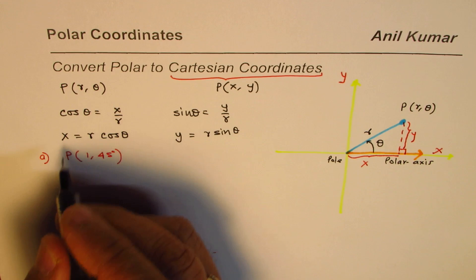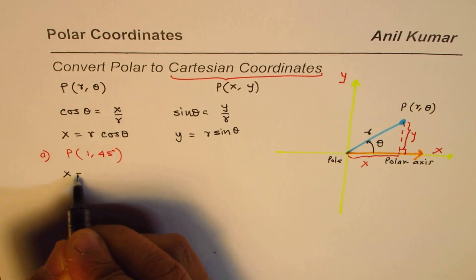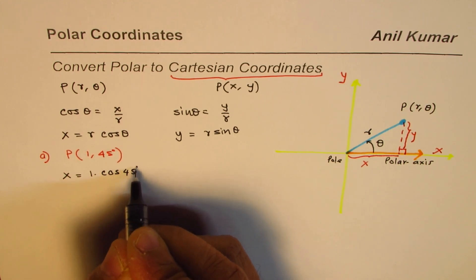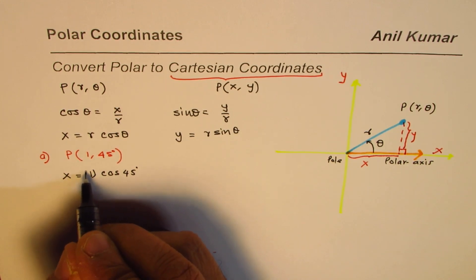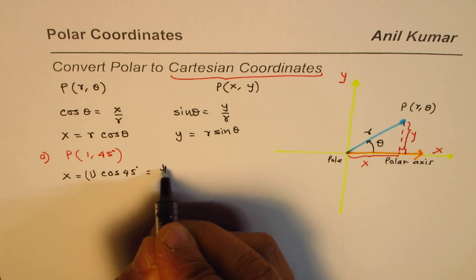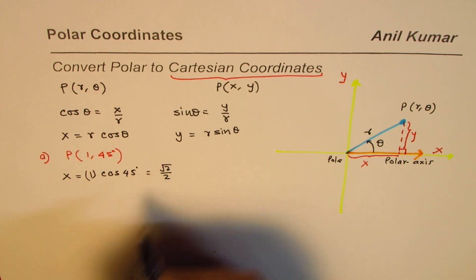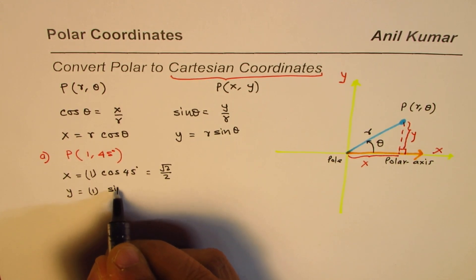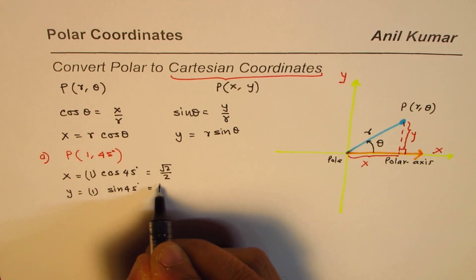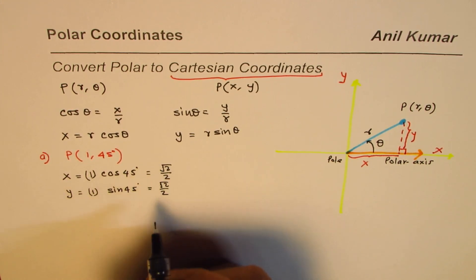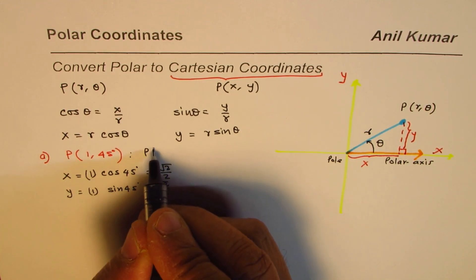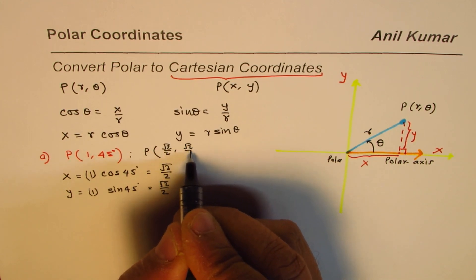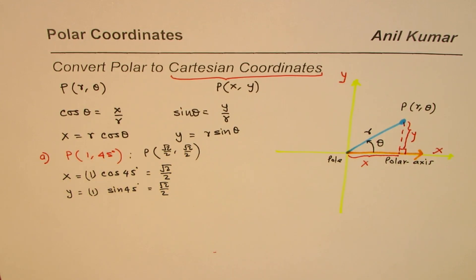When I say (1, 45°), x will be 1 times cos of 45°, which is 1 over square root of 2, or square root of 2 over 2. And the y value will be 1 times sine of 45°, which is also square root of 2 over 2. So the equivalent Cartesian point can be written as (√2/2, √2/2).